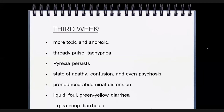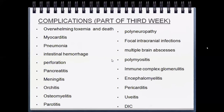In the third week, diarrhea may appear — liquid and green-yellow colored, the so-called 'pea soup diarrhea.' Without treatment the patient goes into severe complications. Enteric fever can affect all organs of the body. The child may develop myocarditis, pneumonia, and intestinal hemorrhage leading to blood in stool or a positive occult blood test. This is the week with the most complications and the highest risk of death.